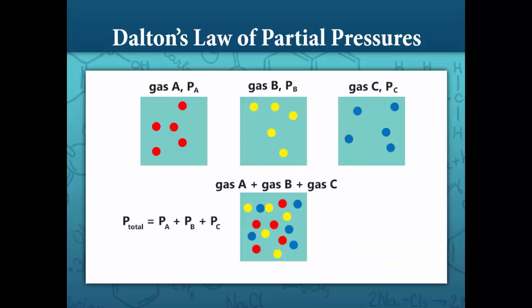Here we have an illustration. We have gas A in a container by itself exerting a pressure PA, gas B — the yellow particles — in a container by itself exerting a pressure PB, and gas C in a container by itself with blue particles exerting a pressure PC. If we put all three of these gases in the same container, the total pressure is going to be the sum of the individual partial pressures: the pressure of A plus the pressure of B plus the pressure of C.